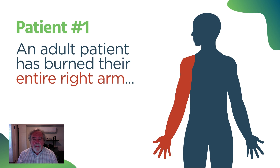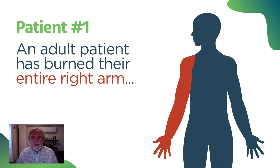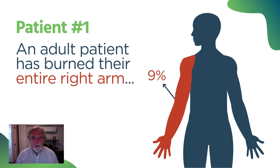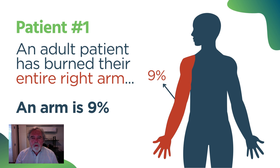Patient number one: an adult patient has burned their entire right arm. The most basic part of the Rule of Nines — an arm is 9%. They burned their entire right arm, so the answer is 9%. It's a giveaway, a warm-up.